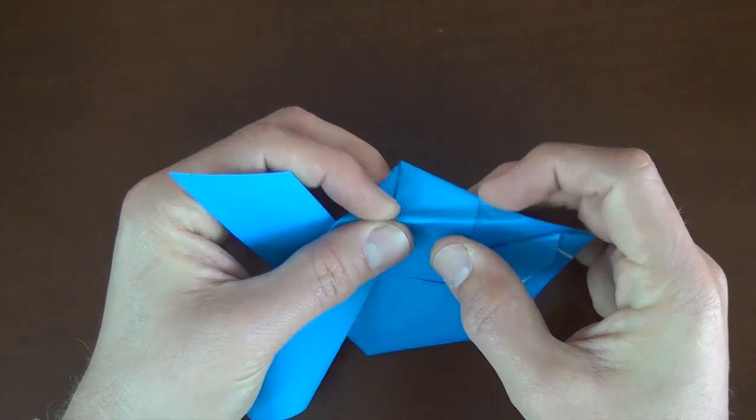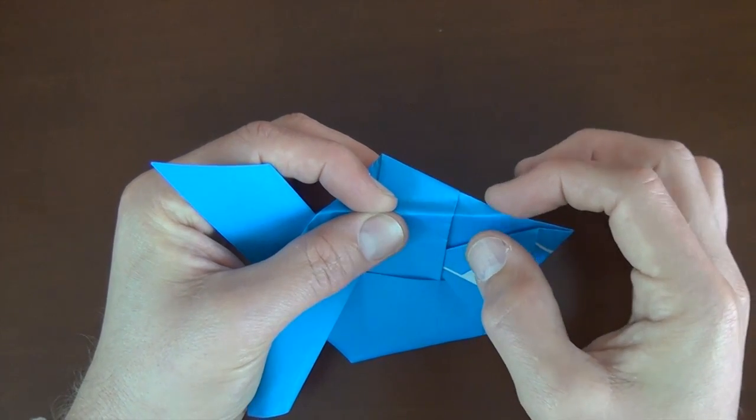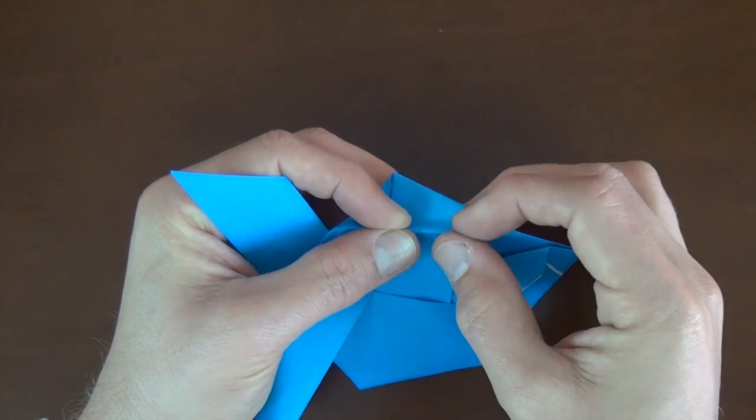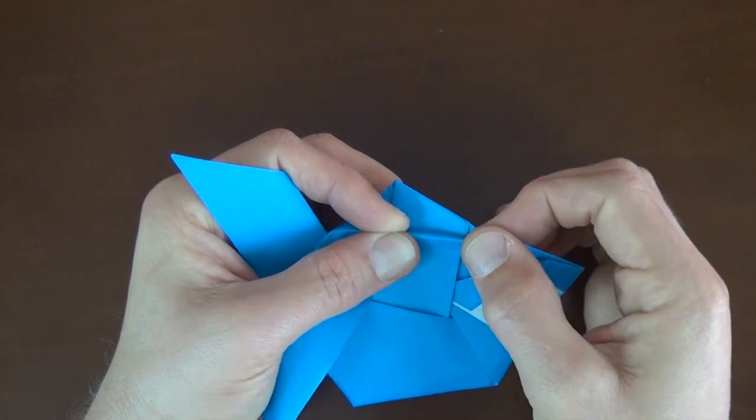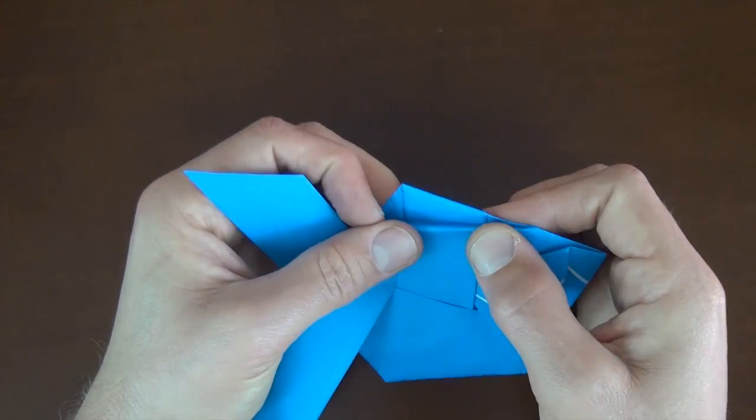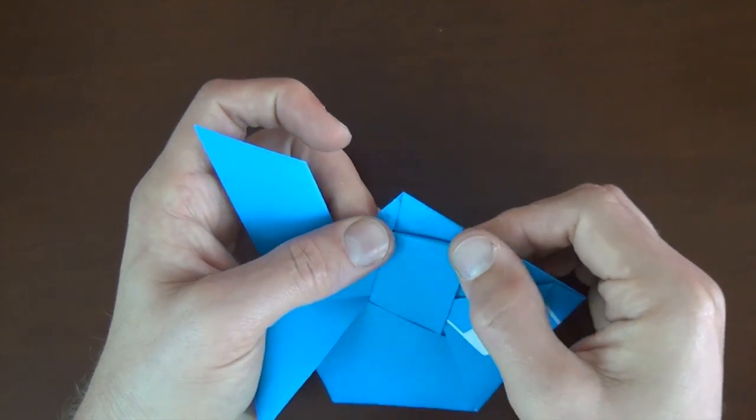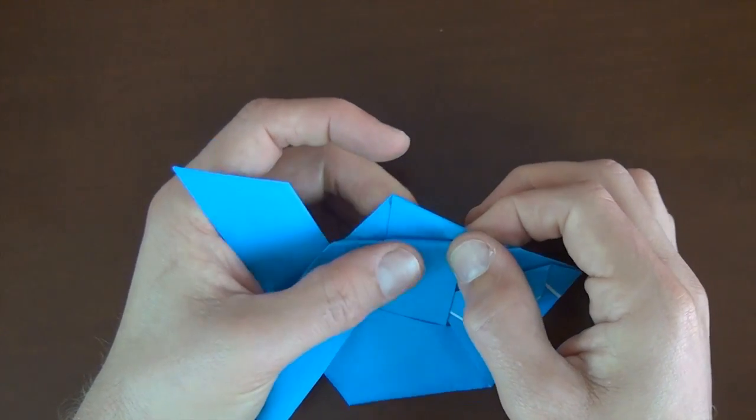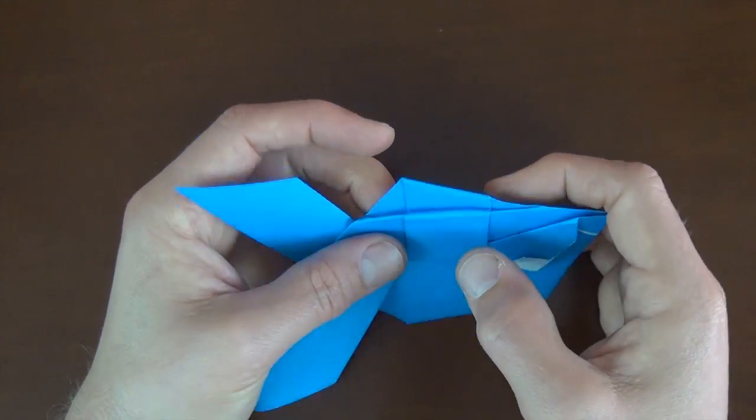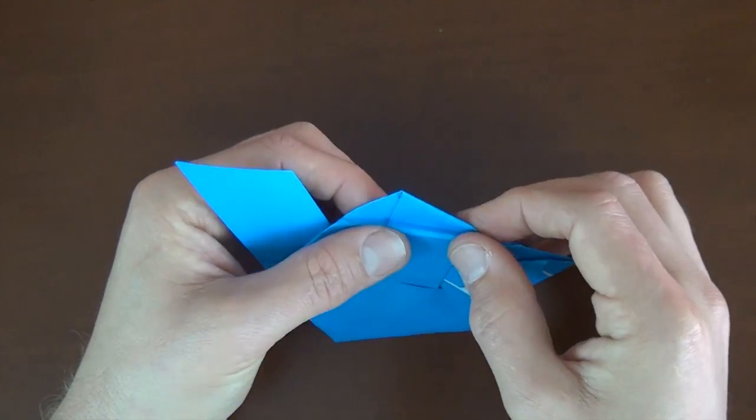We're going to make a little pleat right here. So we need to make a valley fold. And the valley fold is going to touch this point. So it converges right to here. And it goes back. And the smaller you can make it, the better. Because that way it'll be a larger fin. So that's what it looks like.